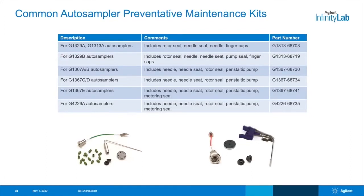Since many auto sampler components should be replaced at the same time, Agilent offers a number of maintenance kits for our auto samplers, which include just about everything you might need to keep up the performance of your auto sampler. Kits make it really easy and fast to find the exact components you need for your system, so you aren't spending time hunting for the right part.